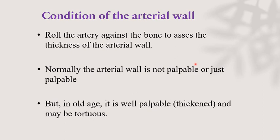Condition of the arterial wall is assessed by rolling the artery against the bone to assess the thickness of the arterial wall. Normally the arterial wall is not palpable or just palpable. But in old age it is well palpable — that is, thickened and may be tortuous. In young adults up to around 40 to 50 years, we cannot palpate the wall, but in old age, above 60 years, it is well palpable because the vessel wall is thickened and may become tortuous.